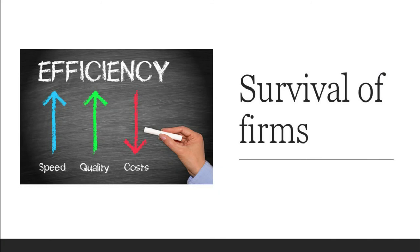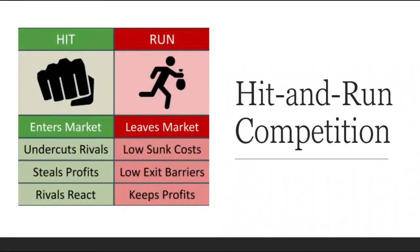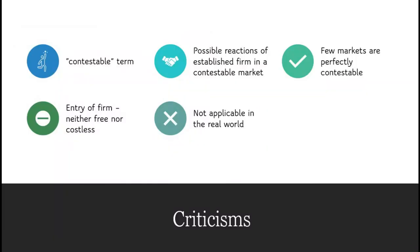In a contestable market, only the most efficient firms can survive. Inefficient firms cannot survive because of high costs of production, which attract new entrants that provide the same output at lower costs and prices, forcing existing inefficient firms to exit. Firms with large economies of scale operating at the lowest cost can survive. Another feature of highly contestable markets is hit-and-run competition: firms enter a market when they can earn high profits and inflict losses on existing firms, then quickly exit the market.